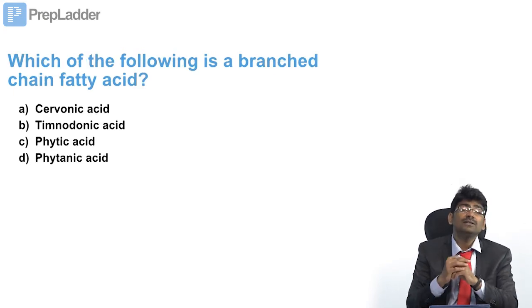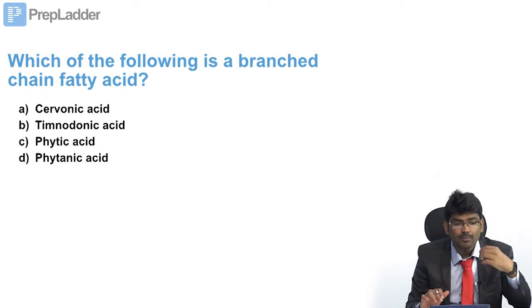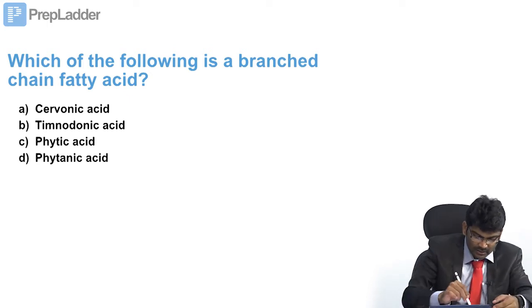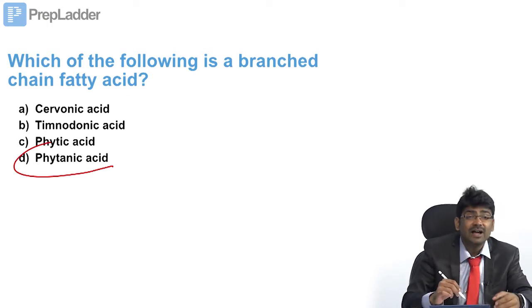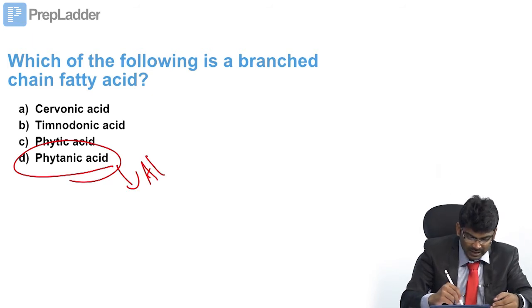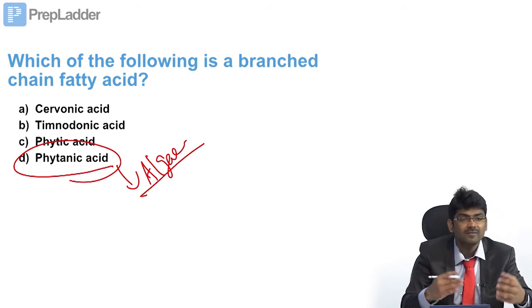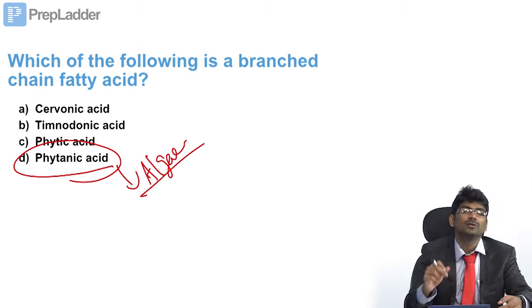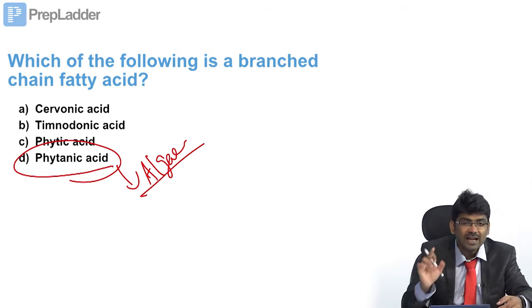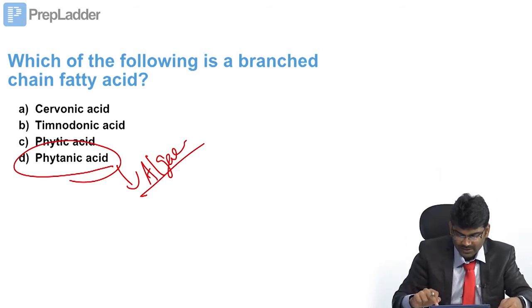Which of the following is a branched chain fatty acid? There are certain fatty acids which are branched — that is phytanic acid. Phytanic acid is present in algae, so fish which eat algae will also contain phytanic acid. Phytanic acid is a branched chain fatty acid. We will encounter this again in upcoming questions.